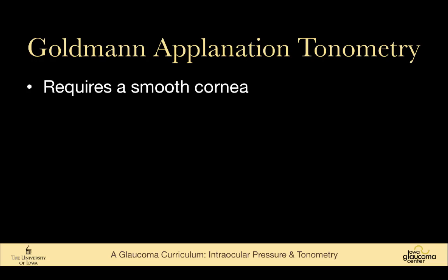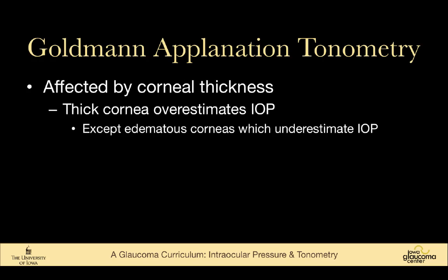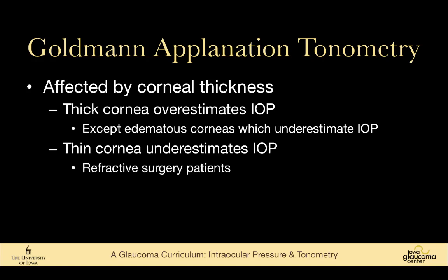Goldman tonometry requires a smooth cornea and is affected by corneal thickness. A thick cornea overestimates pressure — except in an edematous cornea, which actually underestimates it. Thin corneas underestimate pressure. Many patients who've had refractive surgery have thin corneas, making the intraocular pressure measurement a bit challenging.